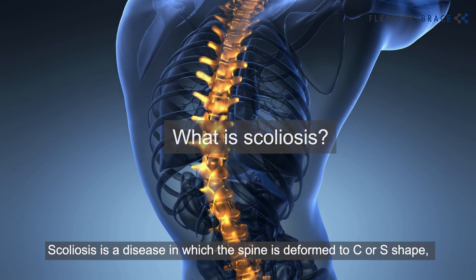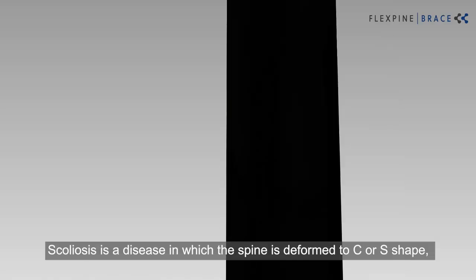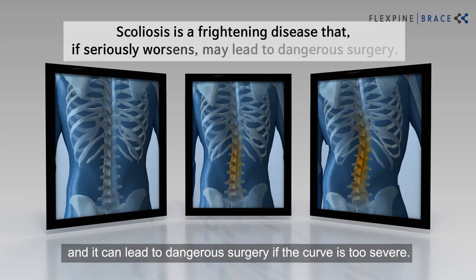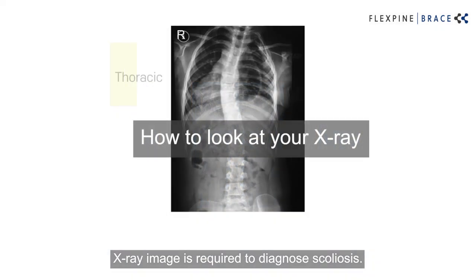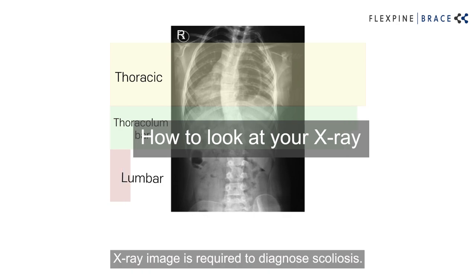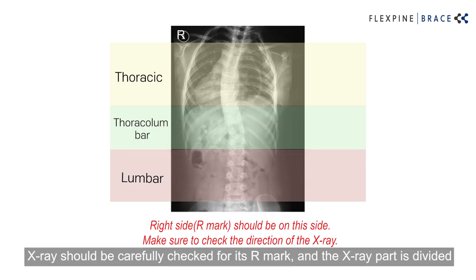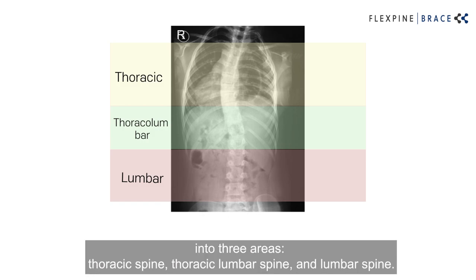Scoliosis is a disease in which the spine is deformed to a C or S shape, and it can lead to dangerous surgery if the curve is too severe. An X-ray image is required to diagnose scoliosis. The X-ray should be carefully checked for its R mark, and the X-ray is divided into three areas.